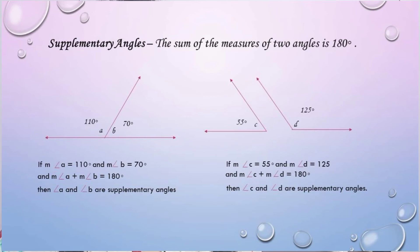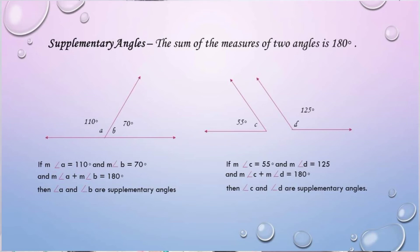Then we have supplementary angles — the sum of the measures of two angles is 180 degrees. Therefore, the previous one, linear pair, is also supplementary angles.